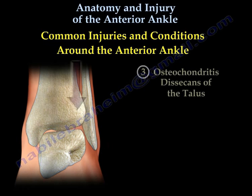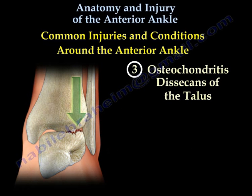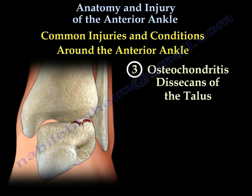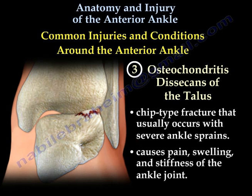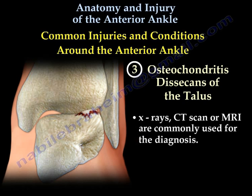The third condition is osteochondritis dissecans of the talus — a chip-type fracture that usually occurs with severe ankle sprains and causes pain, swelling, and stiffness of the ankle joint. X-rays, CT scan, or MRI are commonly used for diagnosis.